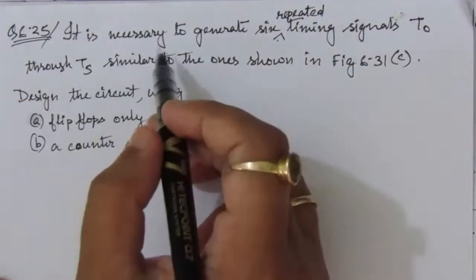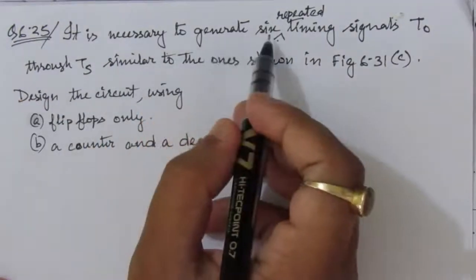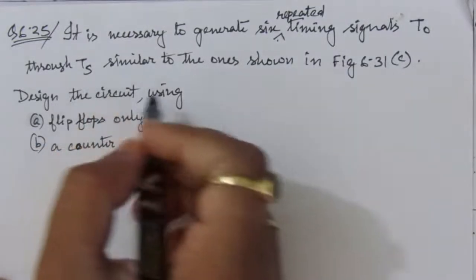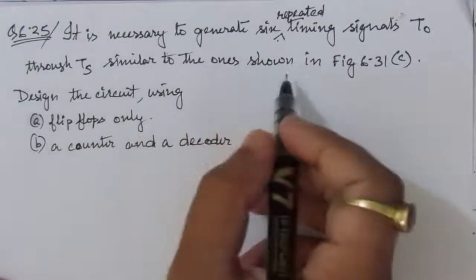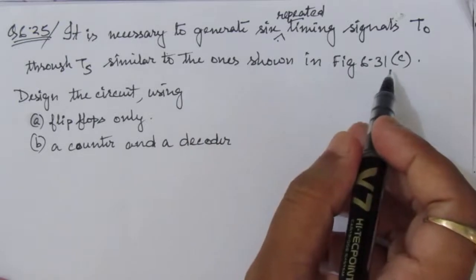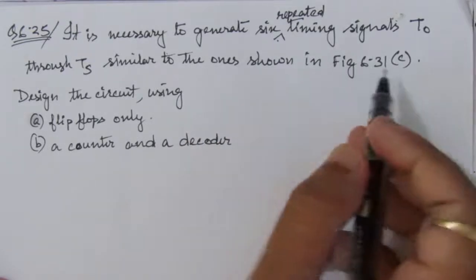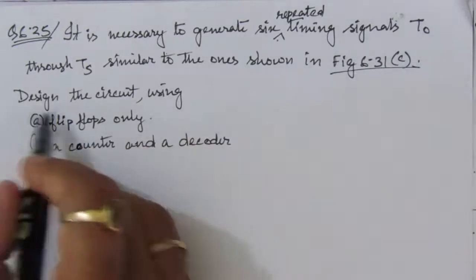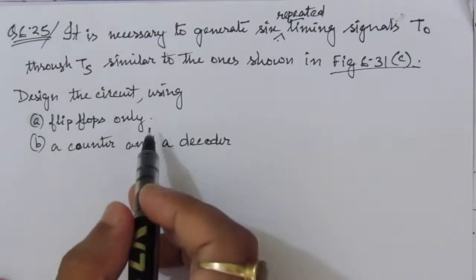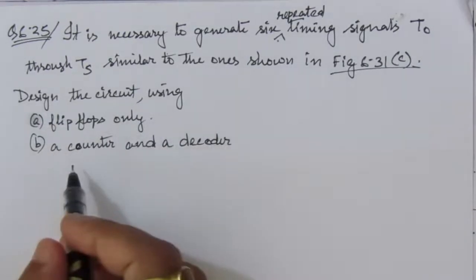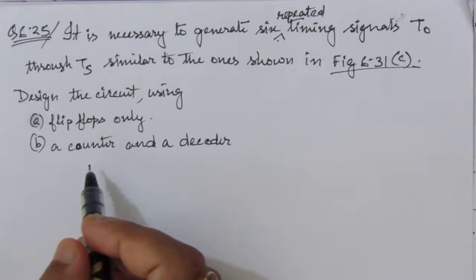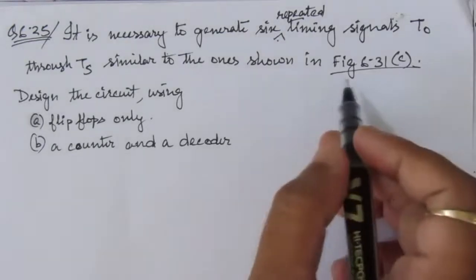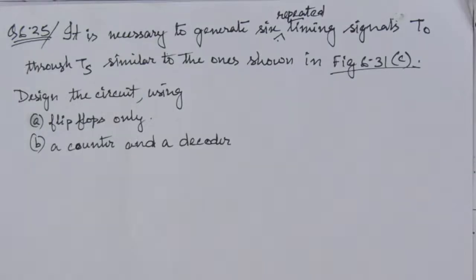The problem is: it is necessary to generate 6 repeated timing signals T0 through T5, similar to the one shown in figure 6.31C. This figure you can find from the book. We are asked to design a circuit using flip-flops only. In the second case, we can use a counter and a decoder. So let us first look at figure 6.31C.